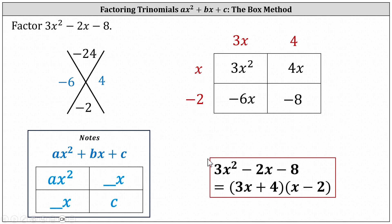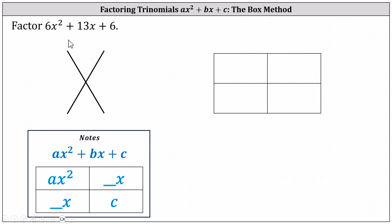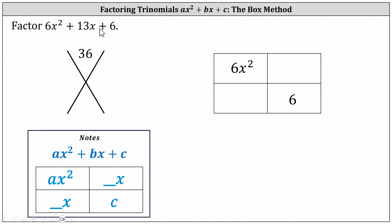Let's take a look at another example. We want to factor 6x squared plus 13x plus 6. We first place 6x squared and 6 along the main diagonal of the 2 by 2 box. Now we need to determine the factors of a times c that add to b. a times c is 6 times 6, or 36, and b is 13.